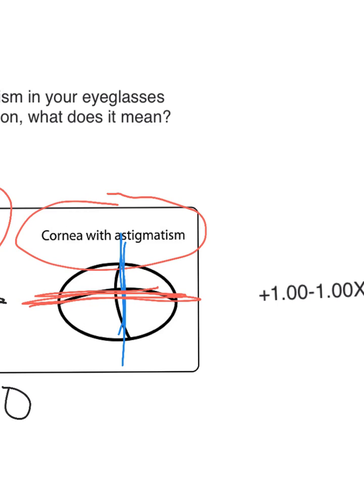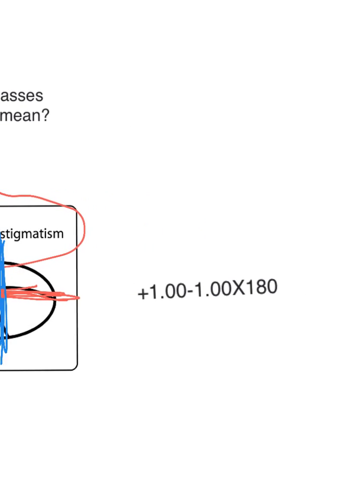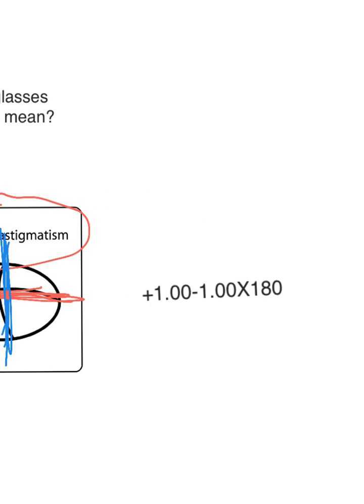Remember that the power of the red meridian is different from the power of the blue meridian. So from this prescription — from these three numbers — you can tell the power of each meridian.